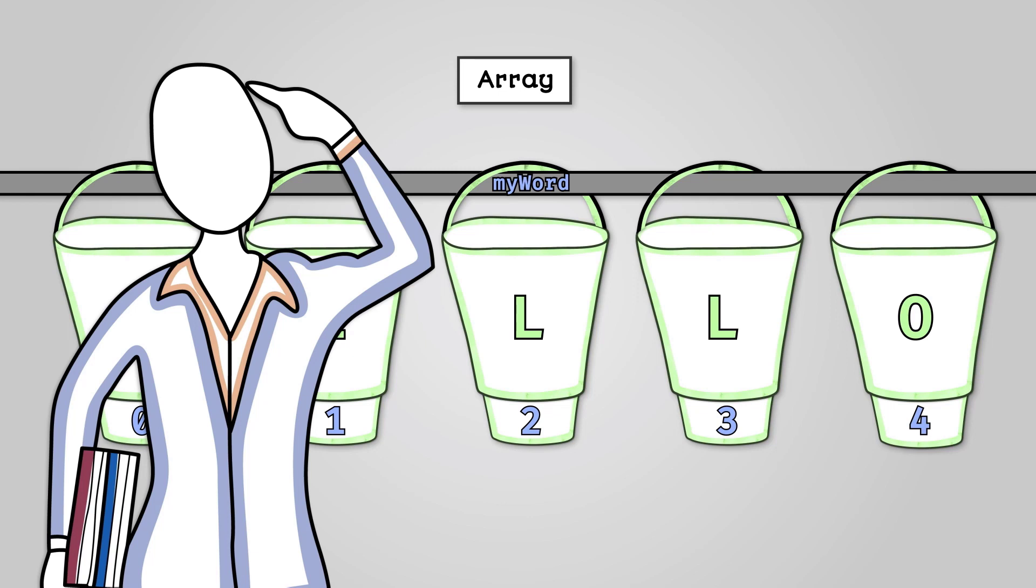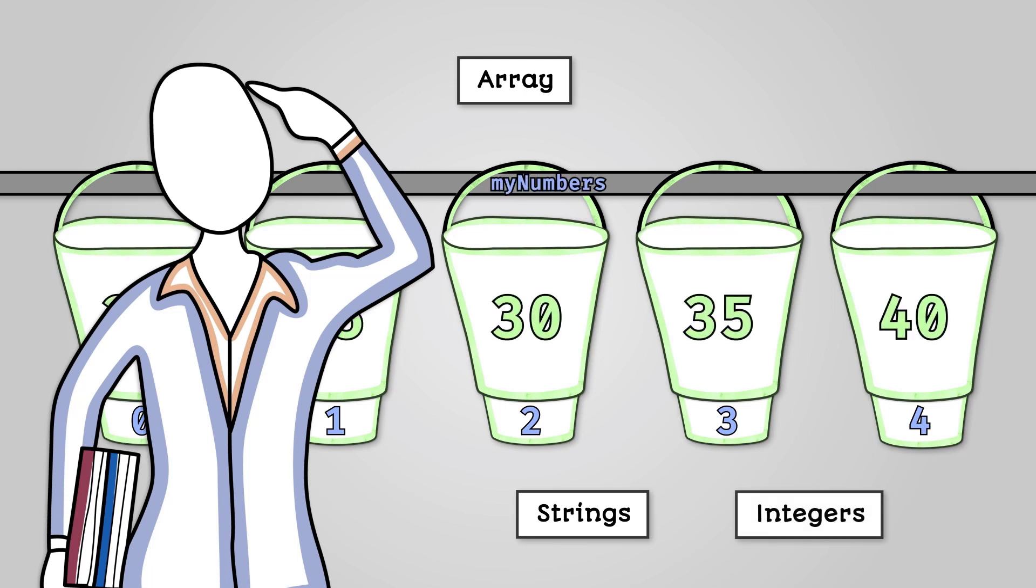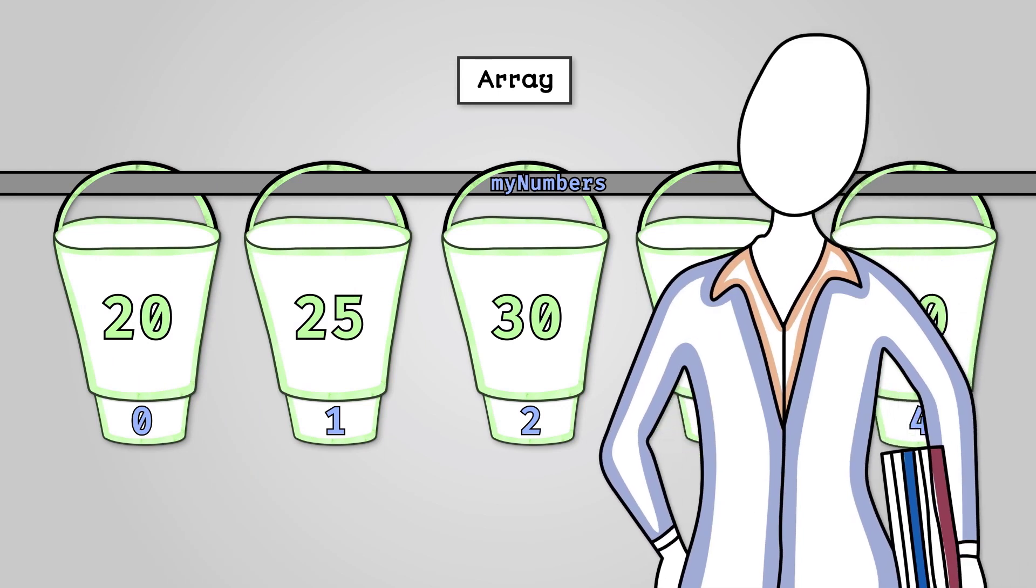For example, it could be an array of strings which stores a list of words, or an array of integers storing a list of numbers. However, you cannot mix data types inside a single array. You cannot have one bucket storing a number, another bucket storing a string, and so on.